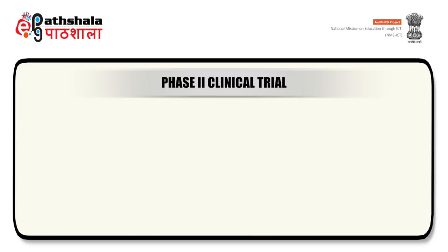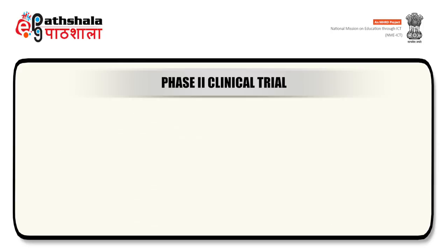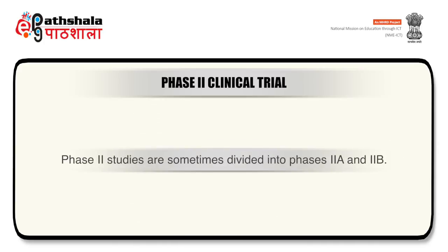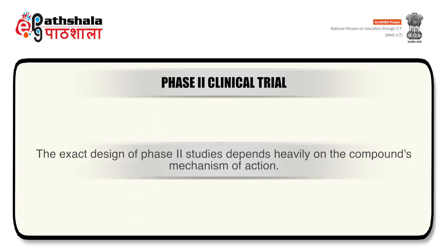After Phase 1 trials, Phase 2 trials are performed on about 100 to 500 patients and are designed to assess the efficacy of the drug and to continue the Phase 1 safety measurements. Most importantly, Phase 2 trials help to establish the therapeutic dose for the large-scale Phase 3 trials. Phase 2 studies are sometimes divided into Phase 2A and Phase 2B — Phase 2A is designed to assess dosing requirements, whereas Phase 2B focuses on drug efficacy. The exact design of Phase 2 studies depends heavily on the compound's mechanism of action.